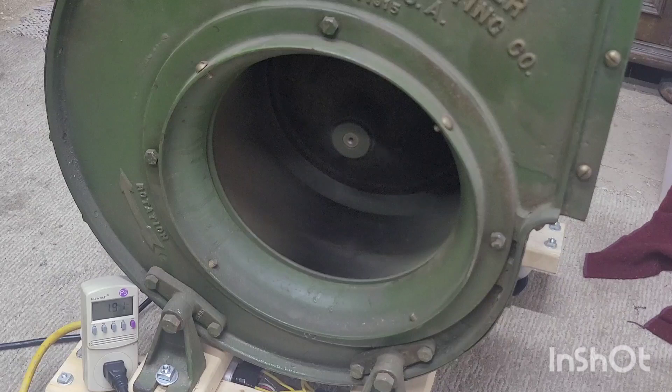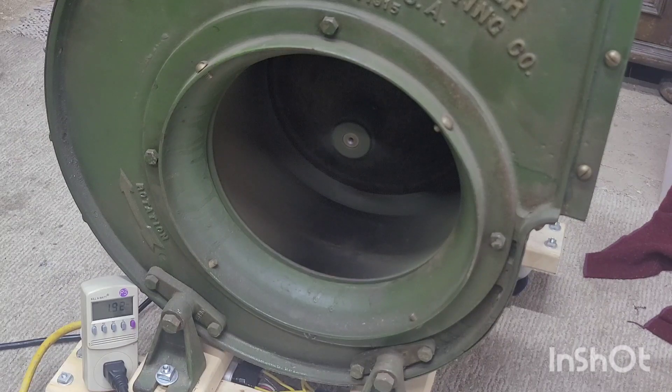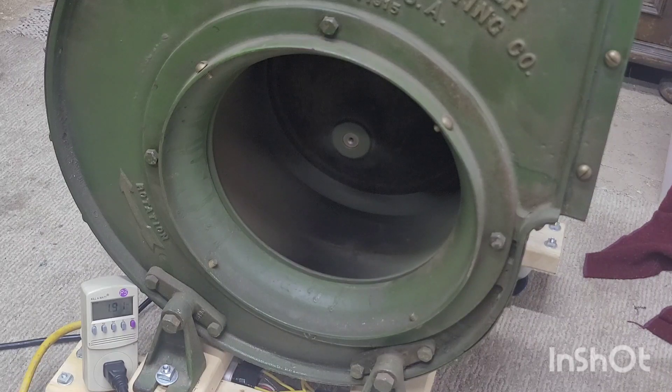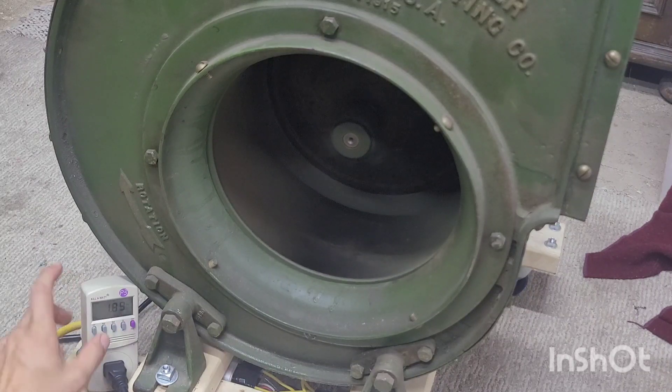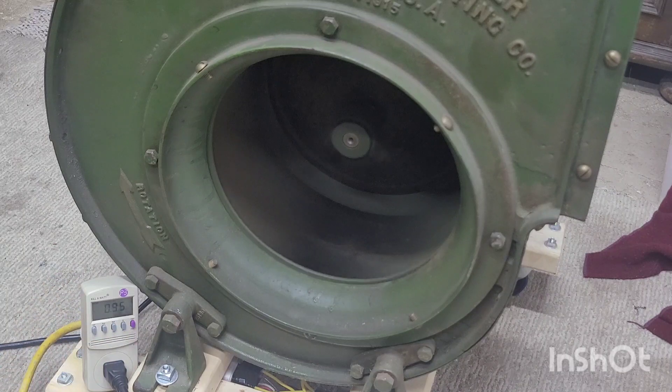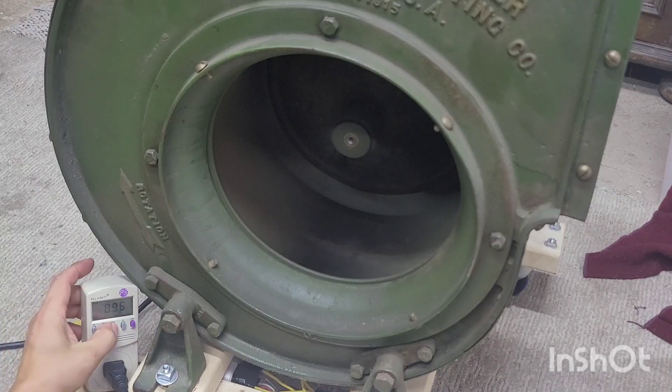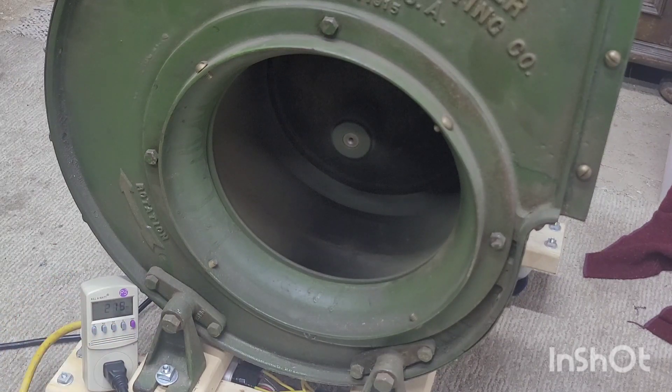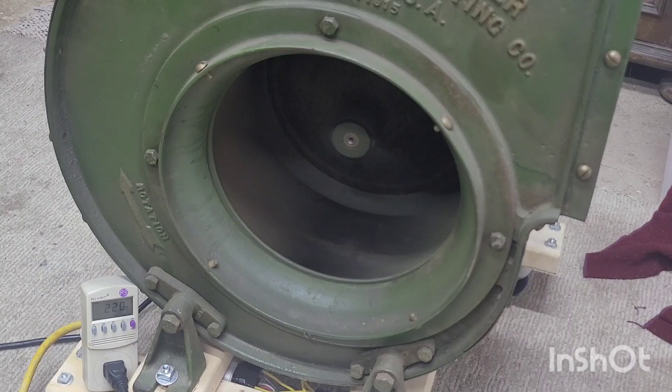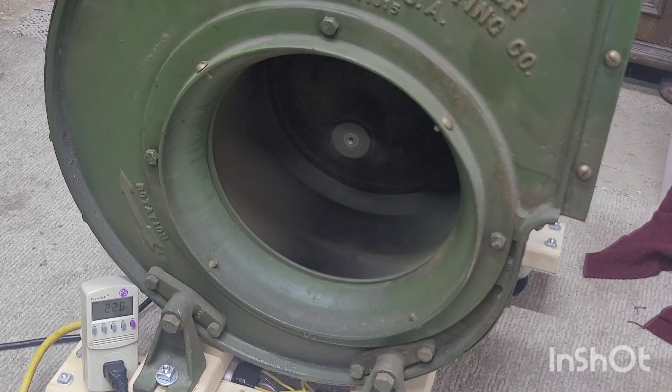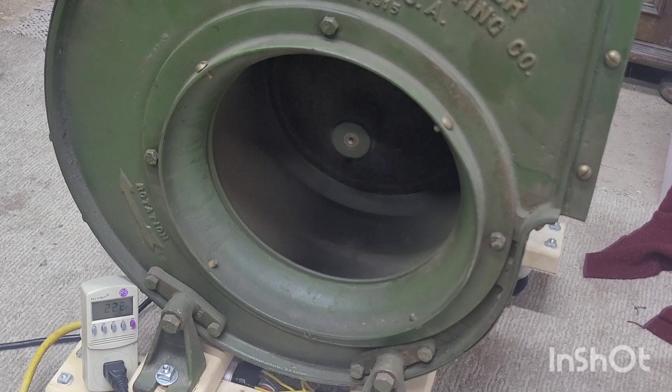You can see we're back up to where we were for current, or I should say back down. 1.92 roughly. And again, power factor 0.95, watts 219. It's basically 220, pretty much the same where it was because nothing's different now that it's running. The start capacitor just helped give it a faster start. So now I'll just turn that off.